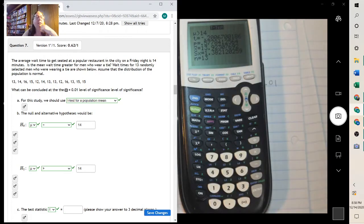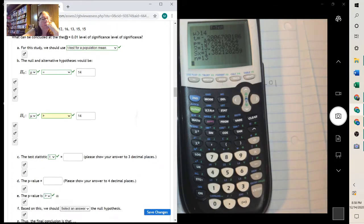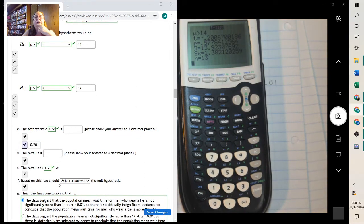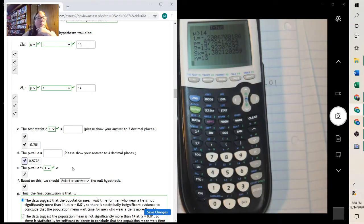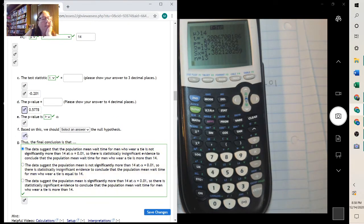And then calculate. And there's your t-value, negative 0.201. And your p-value, 0.5778. Negative 0.201. And then the p-value is greater than the alpha. So we fail to reject. And then it would be this one. Population mean time for men who wear ties is not significantly more.